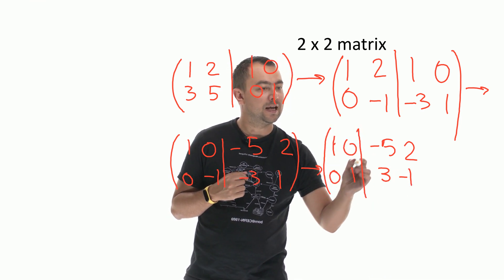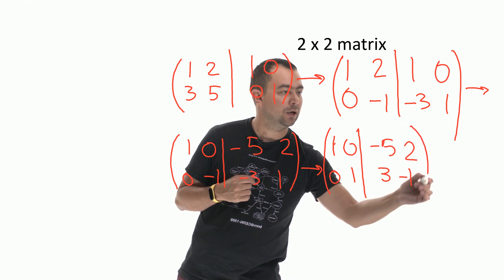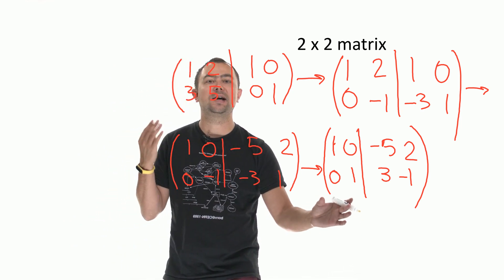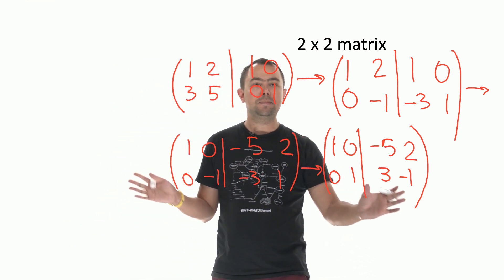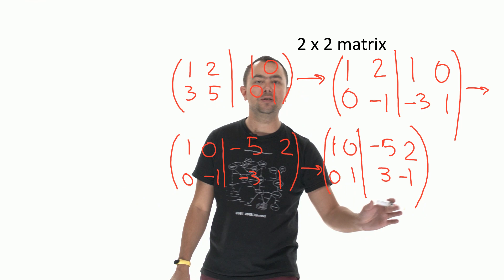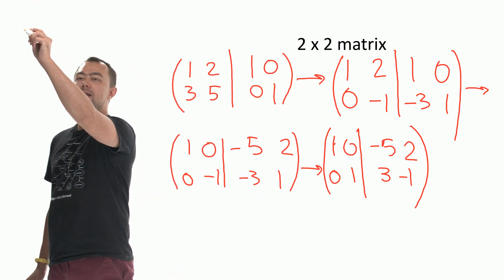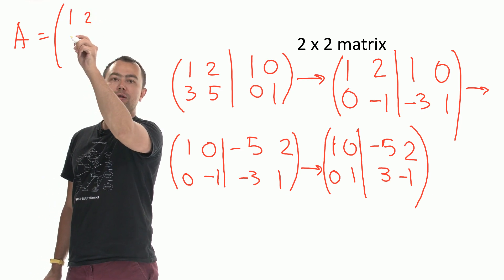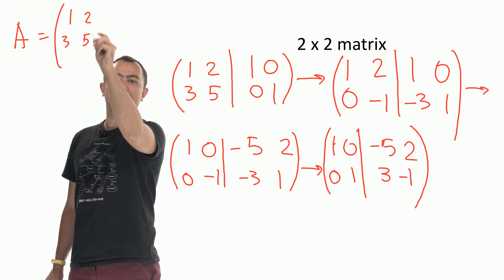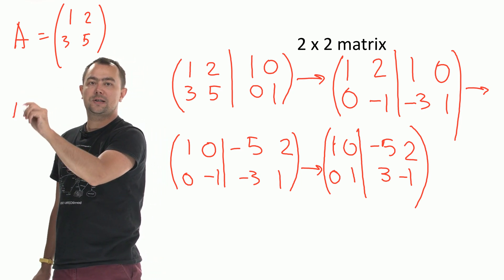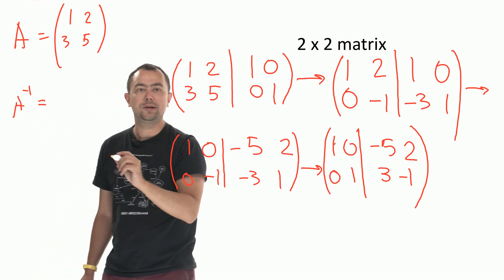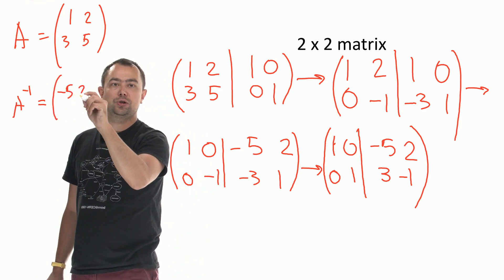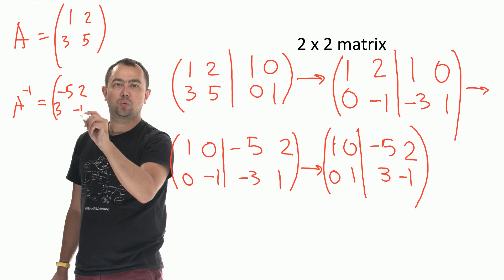Right, now we got the modified augmented matrix. The matrix on the left as you can see is the identity matrix and the matrix on the right is now the inverse. So if the original matrix was 1, 2, 3, 5, then the inverse of that matrix A minus 1 is minus 5, 2, 3, minus 1.